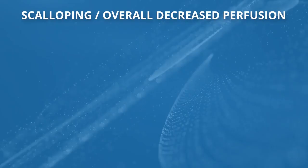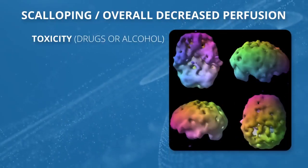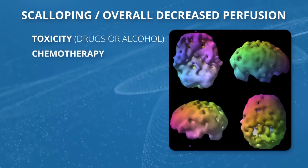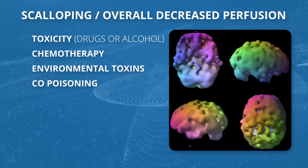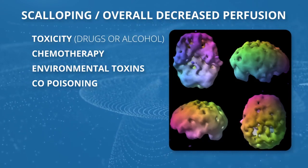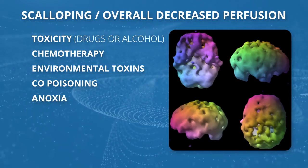The first thing I learned from SPECT is drugs and alcohol are bad for your brain. They give this pattern we call scalloping or overall decreased perfusion. But then I learned there are people who weren't doing drugs and weren't alcoholics that had this pattern. Over the years, I've realized drugs and alcohol can give us this pattern, but also chemotherapy in some patients, environmental toxins like mold, carbon monoxide poisoning — we see this pattern a lot in our firefighters — and anoxia, any lack of oxygen.